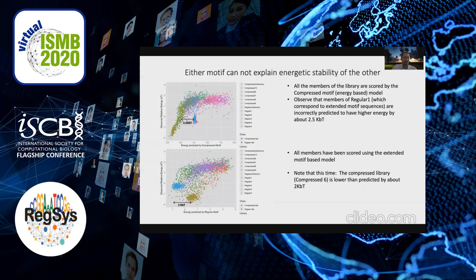What does this mean? This means that this blue blob actually has sequences which are more stable than you would expect. This blue blob actually corresponds to instances of what make up the regular-length motif. So these sequences correspond to the regular-length motif and they're energetically more stable than you would predict using the compressed motif model.